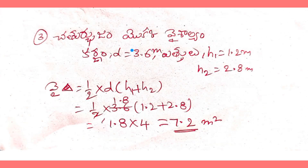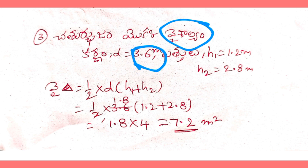Next, we have a formula for area. The formula is: half into diagonal D into H1 plus H2, where H1 and H2 are heights. The values are: D equals 3.6 meters.